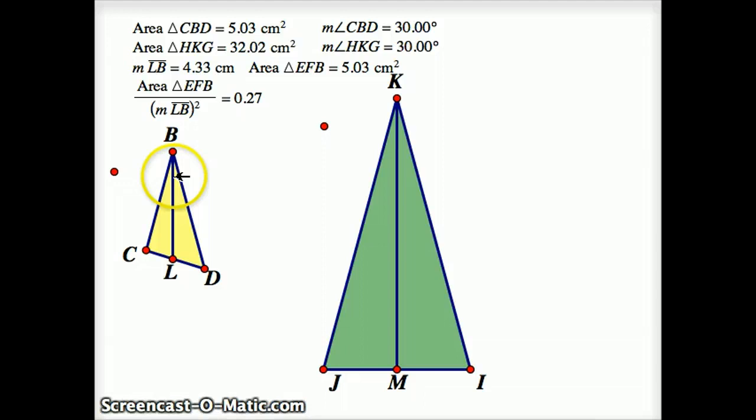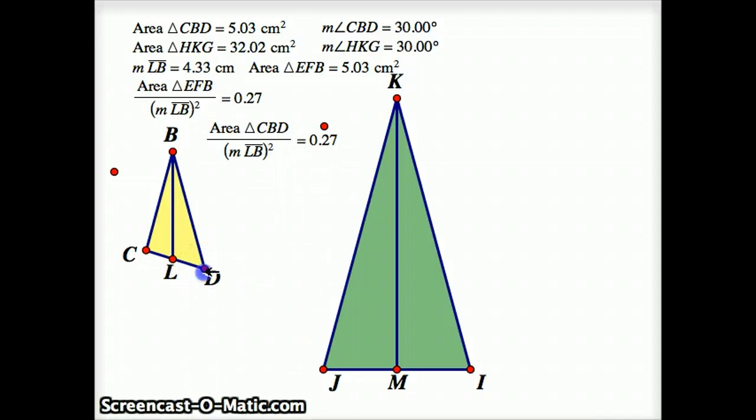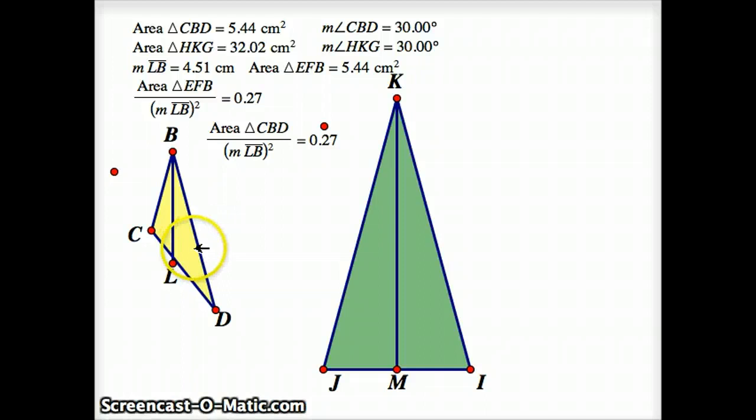I can move this around. With triangle BCD, it's also 0.27. So as long as I keep angle CBD as a 30 degree angle, even though this triangle itself is not an isosceles triangle, its area is proportional to the square of BL, where BL is the height of the isosceles triangle that shares that vertex angle with it. So that's a key concept I want you to keep in mind.